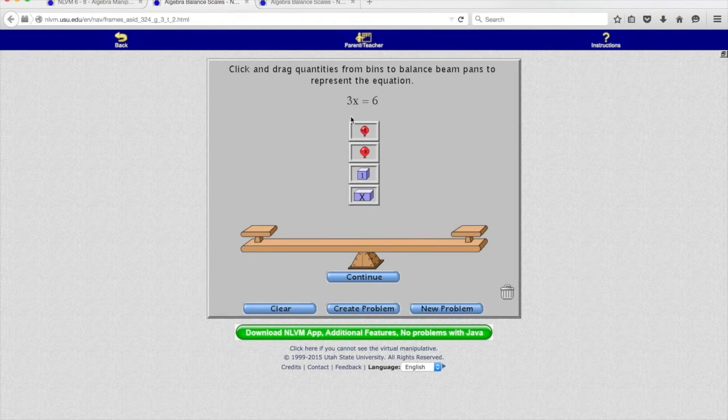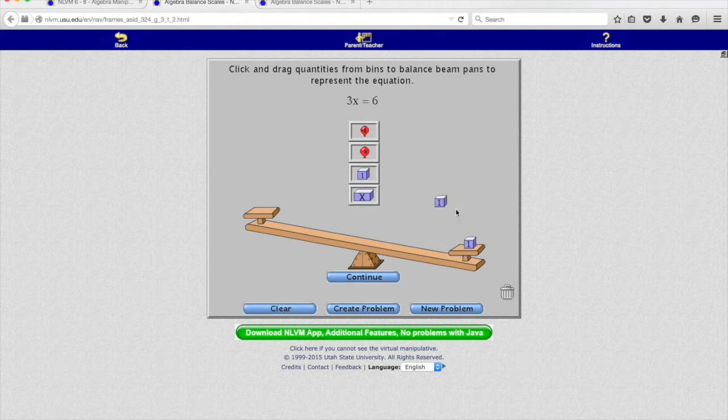So here's our first one. 3x equals 6. Once again, the 6 just represents a weight of 6, so I'll drag those over here. The equal sign represents the middle, or the fulcrum, of our balance scale.